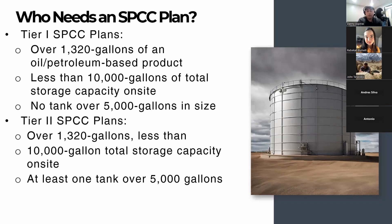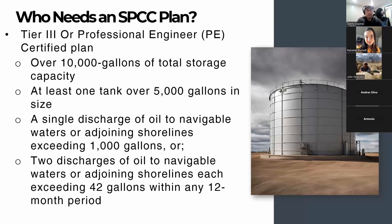Tier 2 is for people who have 1,320 gallons or more, still less than 10,000 gallons of total storage capacity on site, but have one tank that is over 5,000 gallons. Tier 2 is still a self-certified plan, but you can't use the Tier 1 EPA template. Generally in Tier 2, I would recommend creating a full-fledged SPCC plan without the PE certification. Tier 3 is the full-fledged plan — a binder plan that requires PE certification and an on-site inspection. People with over 10,000 gallons of total storage capacity, or at least one tank over 5,000 gallons, will need a PE-certified plan.